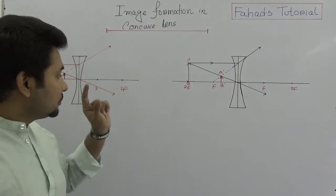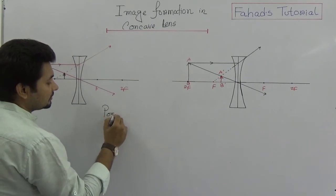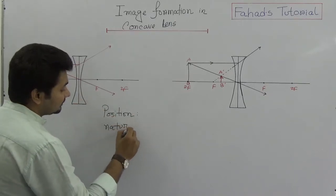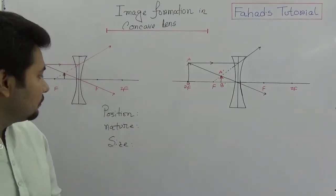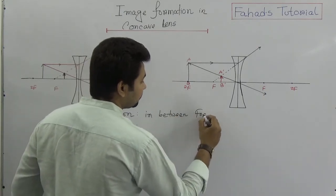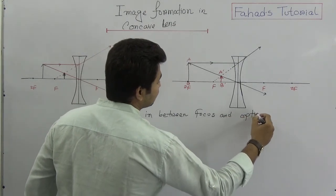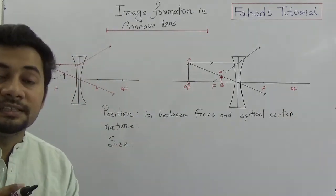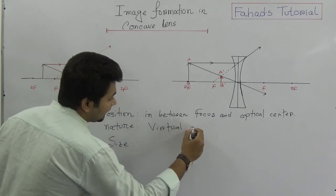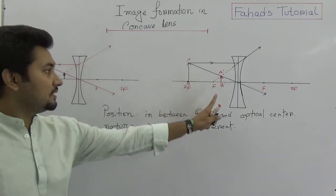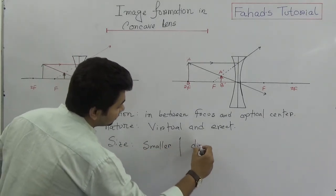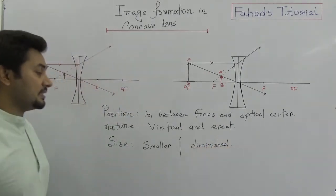So what is the description of the image? Three things we need to mention: position, nature, and size. The position is always between the focus and the optical center. The nature is always virtual and erect. The size is always diminished or smaller. This holds in any case — wherever you place the object in front of a concave lens.